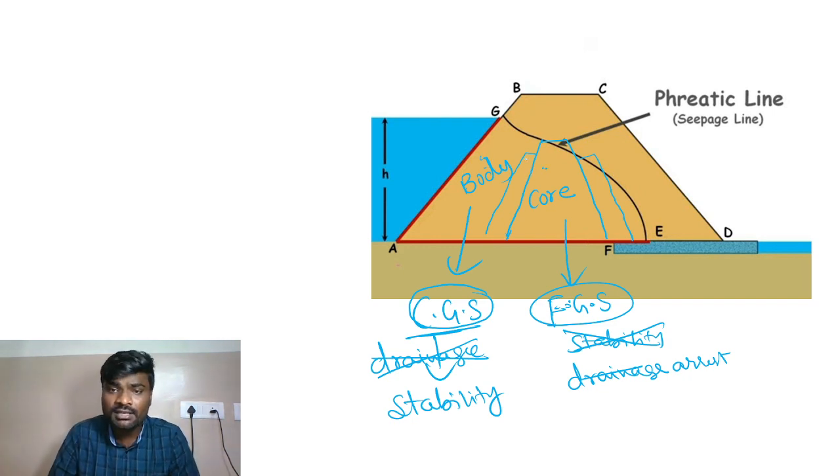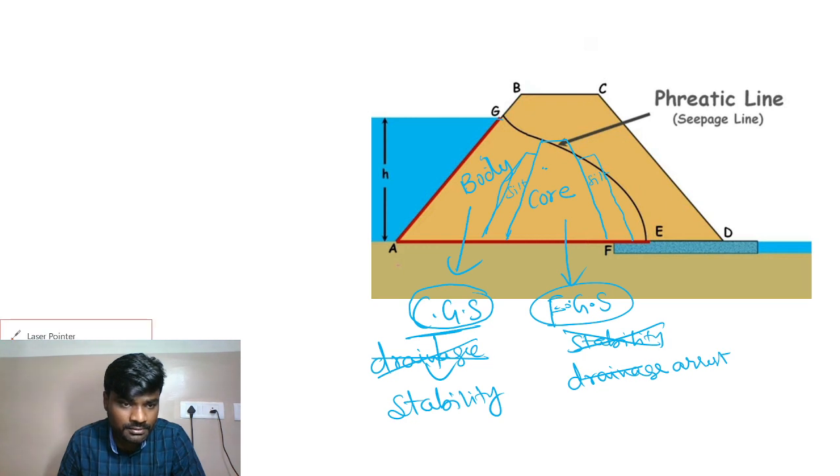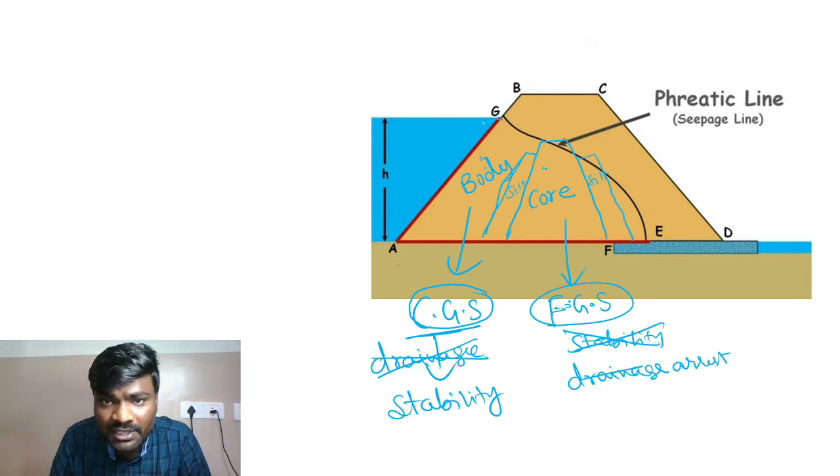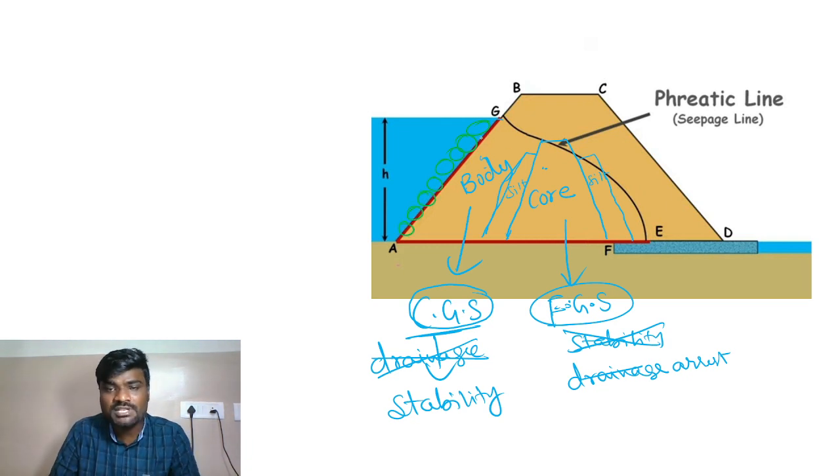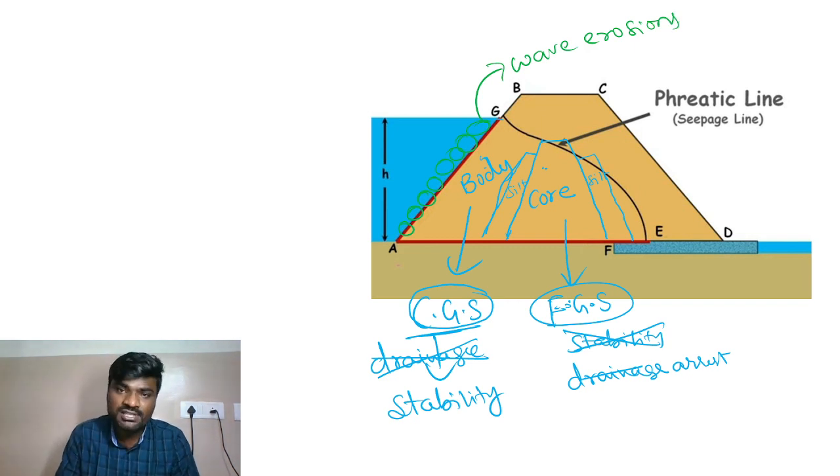Next, we have transition filters. What are transition filters? Between the body with coarse grain and core with fine grain, if drainage needs to be allowed gradually, we provide transition filters. That means we use silt as an intermediate material. Also, in earth dams, on the upstream and downstream slopes, stone pitching is done. Upstream stone pitching protects against wave erosion.